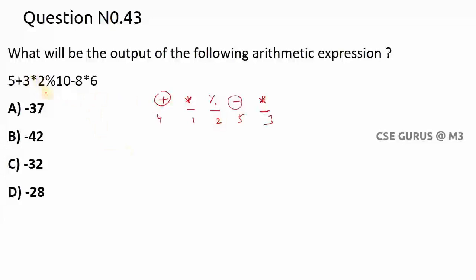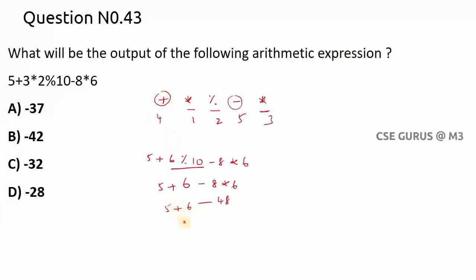Solving step by step: 5 + 3*2 % 10 - 8*6. First multiplication: 3*2 = 6, giving 5 + 6 % 10 - 8*6. Next modulo: 6 % 10 = 6, giving 5 + 6 - 8*6. Next multiplication: 8*6 = 48, giving 5 + 6 - 48. Then 5 + 6 = 11, and 11 - 48 = -37. The answer is -37.